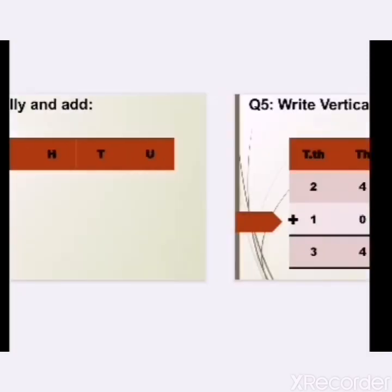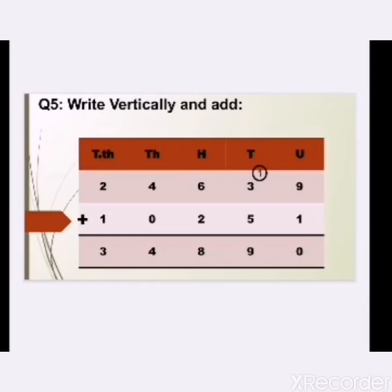We have to write our first value. The first value is 24,639. We have to write it from the right hand side: 9, 3, 6, 4, 2. Next, we have to write the second value, which is 10,251. We have to write this number from the right hand side starting from the unit: 1, 5, 2, 0, 1. After that, we have to put the plus sign.